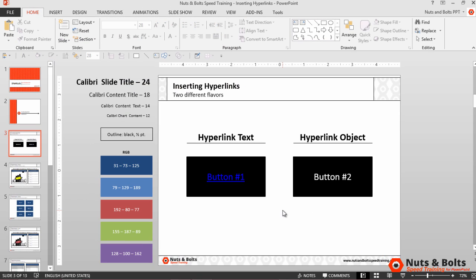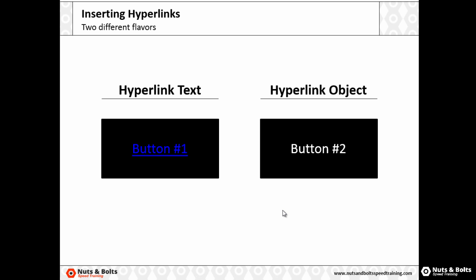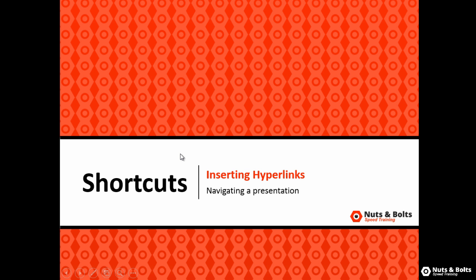To actually use the hyperlink, I need to go to Slideshow Mode. Shift+F5 for Slideshow Mode here on this slide. Notice that as I hover over the hyperlink, I get the screen tip that I just typed. And if I click the hyperlink, I jump to the first slide within my presentation.